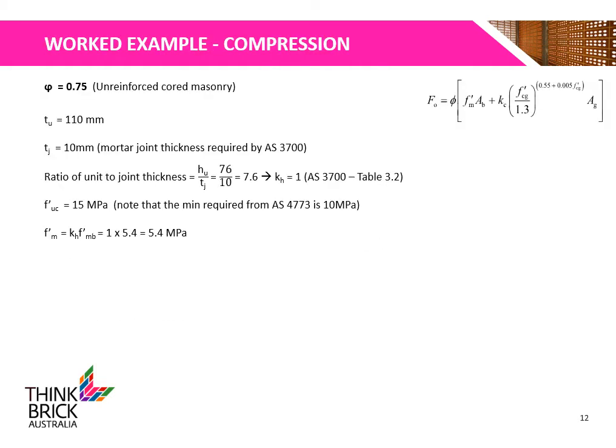The capacity reduction factor Phi is 0.75 for unreinforced cored brick. The unit thickness is 110 mm and the joint thickness is 10 mm. The ratio of unit to joint thickness is determined, and KH is determined from Table 3.2 of AS3700. The unconfined compressive strength of the unit is 15 MPa, and so the compressive strength of the masonry is calculated to be 5.4 MPa.